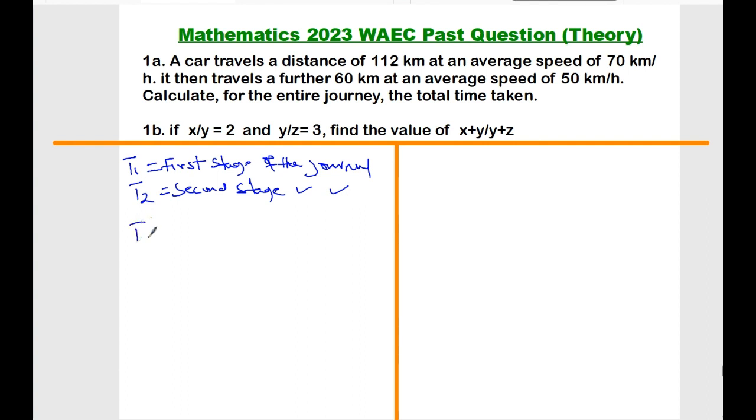The general formula for time equals distance all over speed. And from the question, the first stage of the journey, which is T1, equals the distance is given to be 112, then the speed is given to be 70. So if we divide this, this will give us 8 over 5 or 1.6 hours.